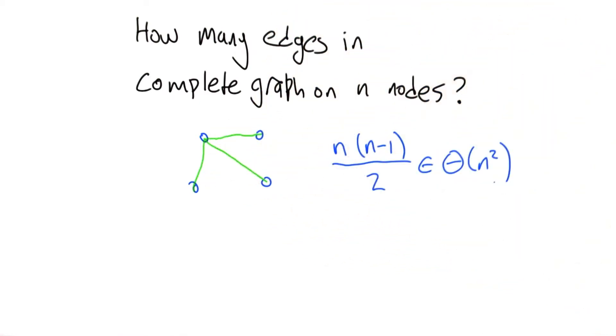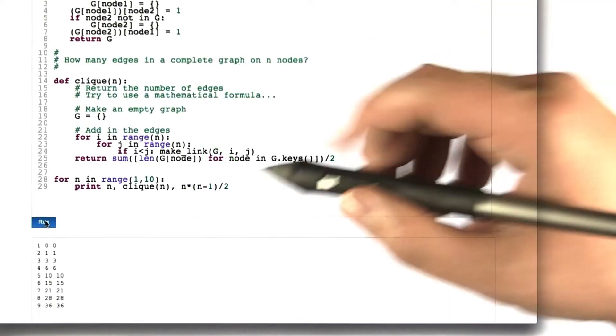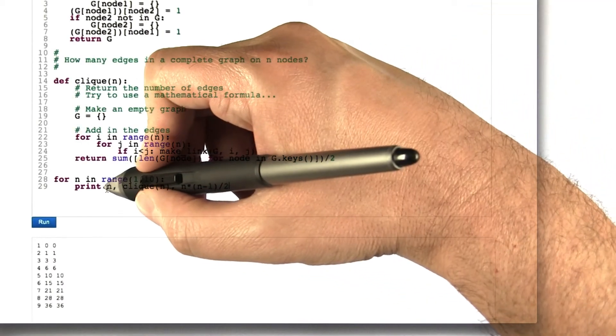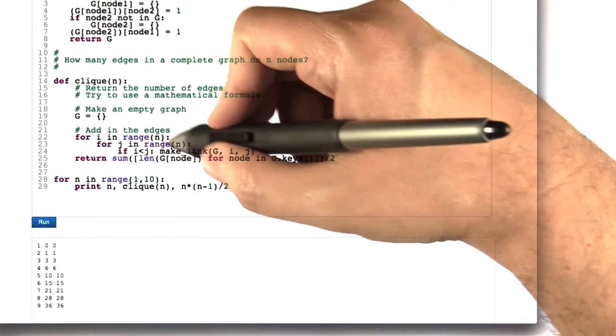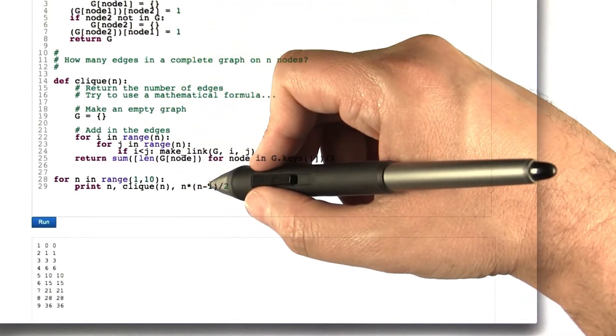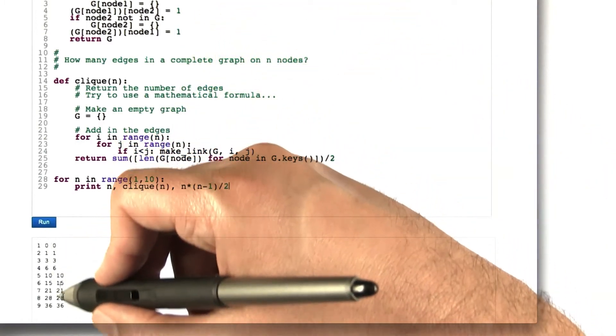So that should be our formula, which is big theta of n squared. So let's just double check this. If we print n clique of n, which I counted by actually creating the clique, compare that to the formula n times n minus 1 over 2, you can see that it matches up perfectly.